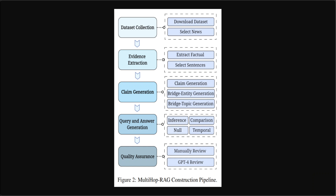There are various other steps in this. If you look at this picture, the researchers have provided detailed information on the construction of the multi-hop RAG dataset — the process of creating a set of multi-hop queries along with corresponding ground truth evidence sets and answers derived from a collection of news articles. The first step is data collection. Researchers downloaded a news dataset using the MediaStack API, which is a REST API interface delivering worldwide news data.